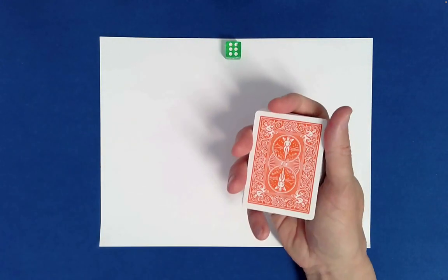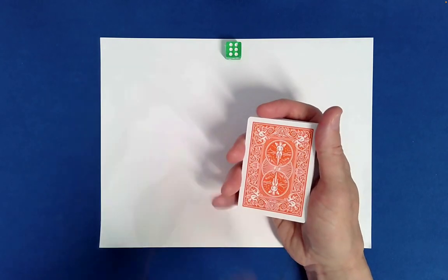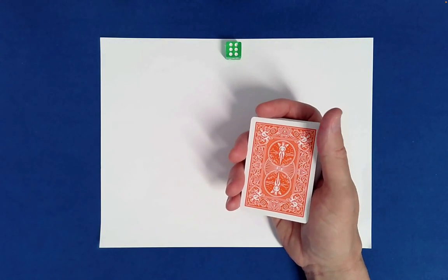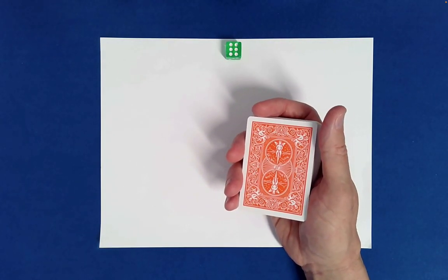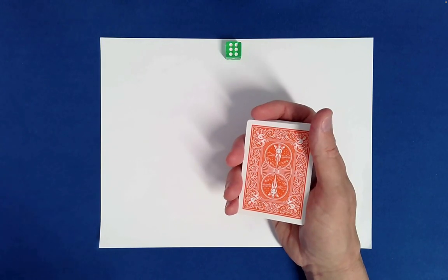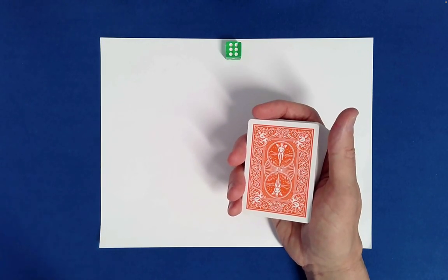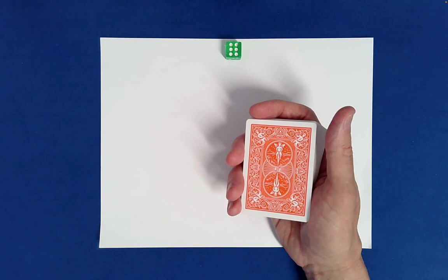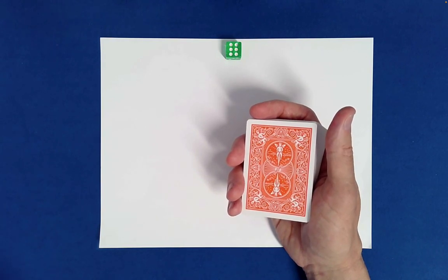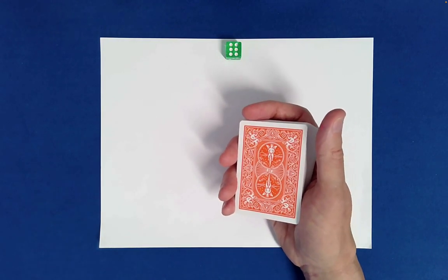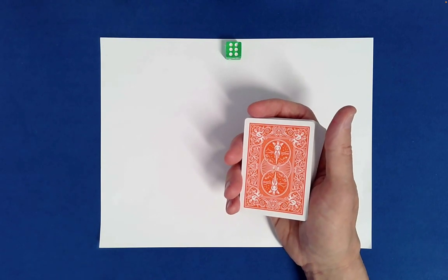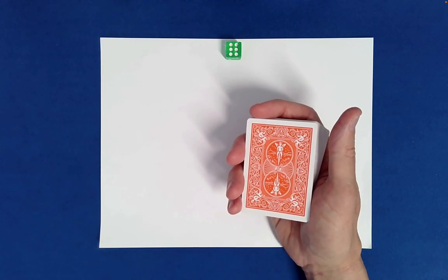So what we're going to do is we're going to choose certain cards from the deck here, and then I'm going to allow you to kind of randomize that little packet, whatever quantity we happen to choose, and then we'll take a look at those cards and see if there's anything interesting about the cards that we kind of randomly chose and then randomly mixed.